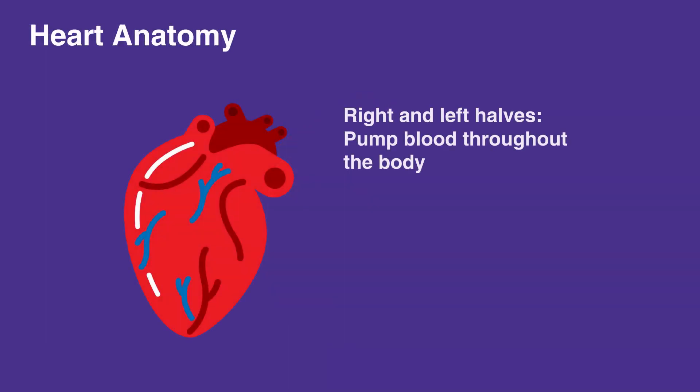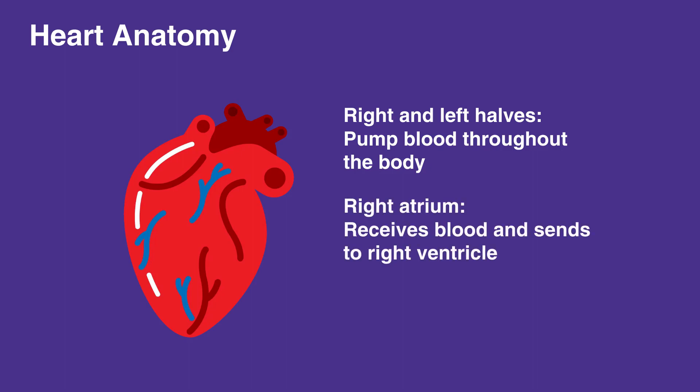The right and the left halves of the heart work together to pump blood throughout the body. The right atrium receives blood from the body and sends it to the right ventricle to be sent to the lungs for oxygenation.